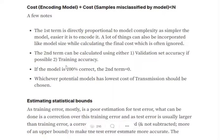Now there are a few points that we should know. If the model is 100% correct, then the cost of samples misclassified by the model equals zero. Apart from that, if you have multiple models competing against each other, whichever model gives us a lesser value for cost of encoding plus cost of samples misclassified should be considered as our final model.